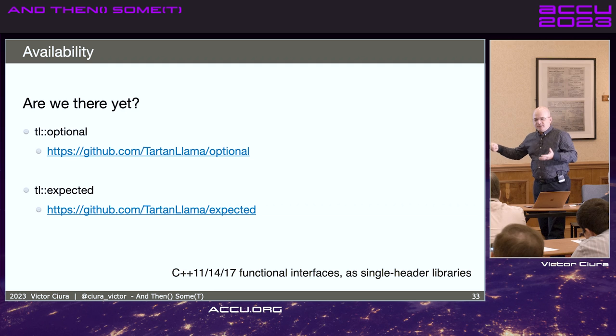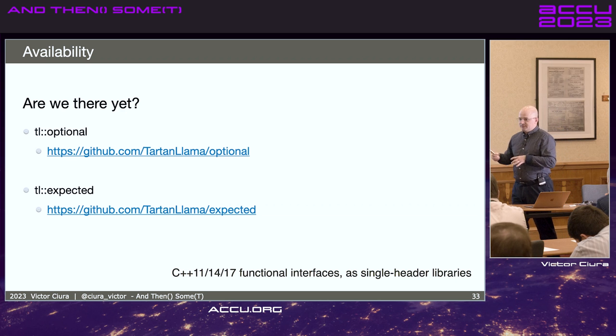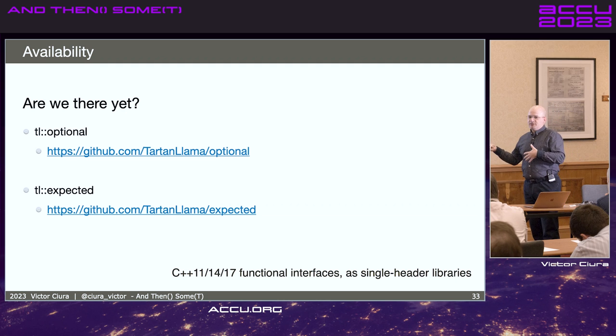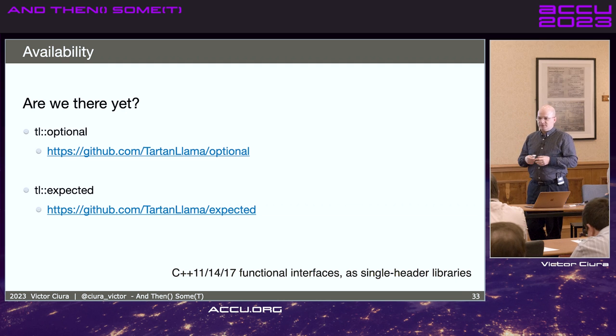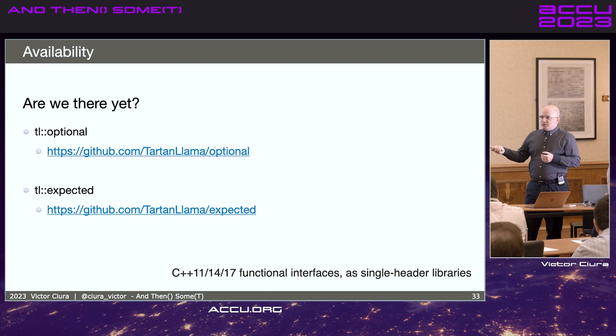If you're not on the latest and greatest and you cannot upgrade, there are alternatives. To this day, I believe these are the best implementations. The ones from Simon Brand, TL optional and TL expected, those are the links. These are header only, very easy to use, to adopt. They work on even in C++ 11, 14. And they're drop-in replacements. So, you could easily use these if you cannot use the C++ 23, for example, and then switch. And they're production quality.